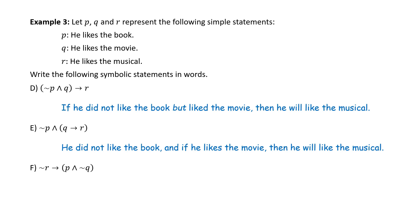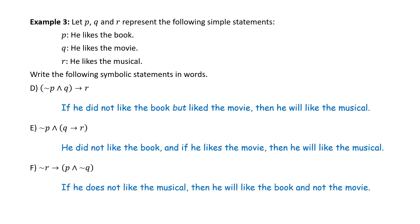Part F: ∼R → (P ∧ ∼Q). The arrow tells us we have an if-then. R is 'he likes the musical,' so ∼R is 'he does not like the musical.' In English: 'If he does not like the musical, then he will like the book and not the movie.'